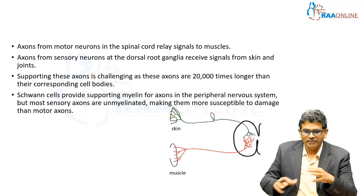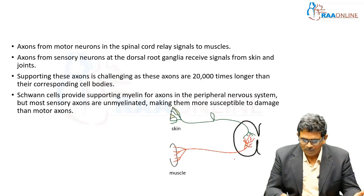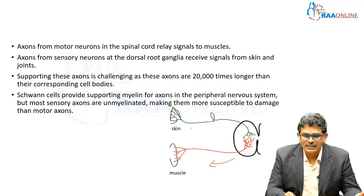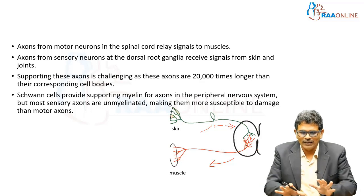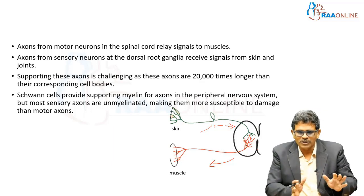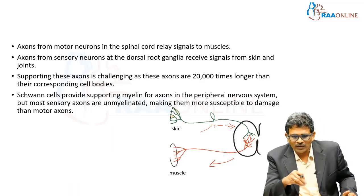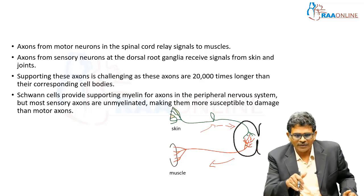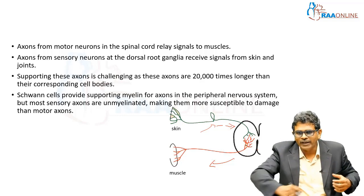When we talk about the peripheral nervous system, we have axons coming from motor neurons in the spinal cord that relay to the muscles — so impulses travel from the spinal cord to the muscles. At the same time, there are sensory impulses: axons from sensory neurons relay to the dorsal root ganglia, receiving signals from the skin and joints and transmitting them back to the spinal cord. The spinal cord controls this process — input comes from the skin and output goes to the muscles. These axons are almost 20 times longer than their corresponding cell bodies, extending from the spinal cord all the way to the tip of the foot.